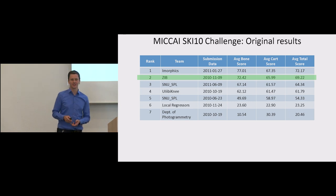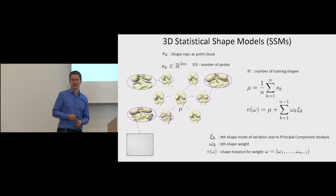I already mentioned the SKI10 challenge was hosted in 2010. These are the original results. The top two teams, iMorphics and ZIB, both used somehow statistical shape knowledge. Since this is a conference on deep learning, statistical shape models are maybe not known by everyone. So I would like to briefly introduce statistical shape models.